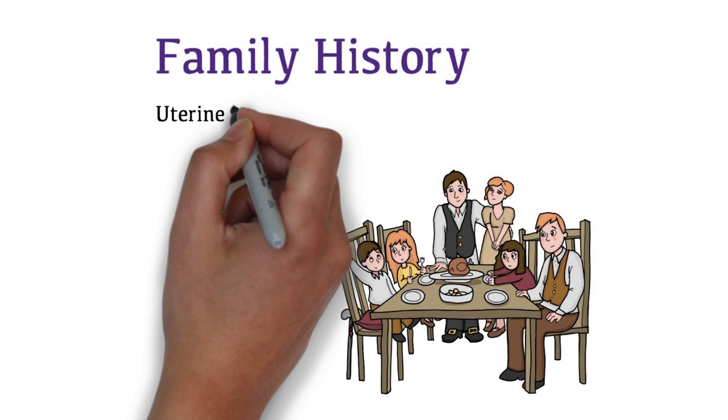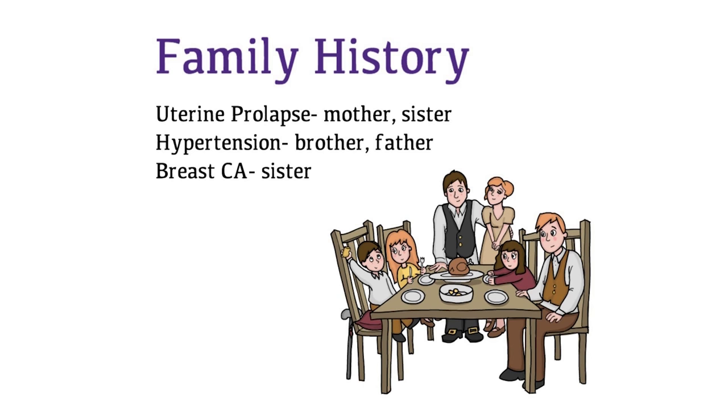Her family history includes uterine prolapse in her mother and sister, hypertension in her brother and father, and breast cancer in her sister.